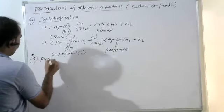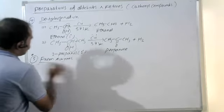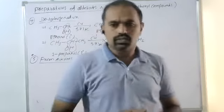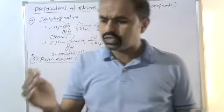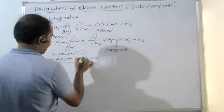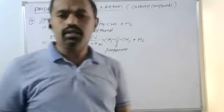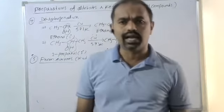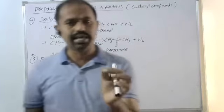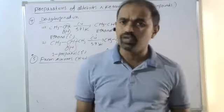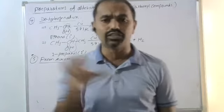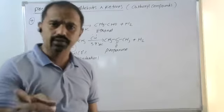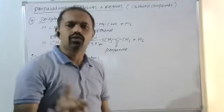Fifth method: from alkynes, based on the hydration method. By using alkynes with carbon-carbon triple bonds, based on the hydration method — by the addition of water — if alkynes undergo hydration, we get corresponding carbonyl compounds. The first alkyne, ethyne, on hydration gives an aldehyde through molecular rearrangement. Except for ethyne, all remaining alkynes give the corresponding ketones through molecular rearrangement.